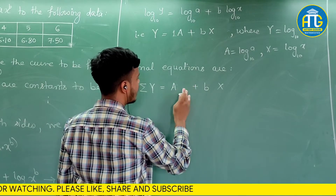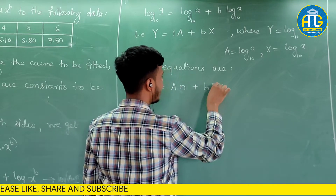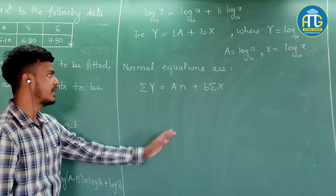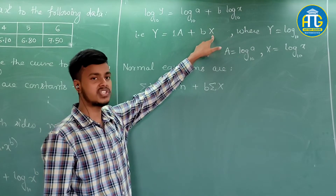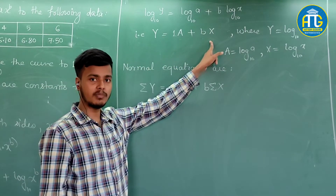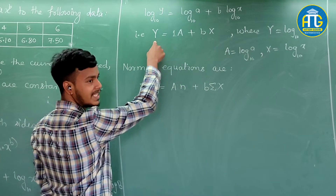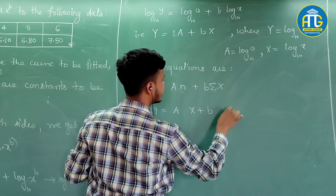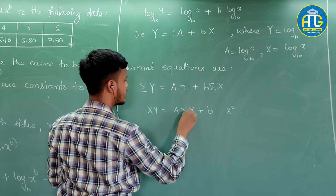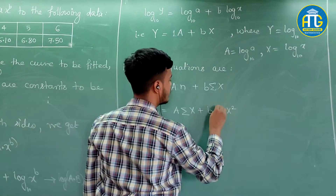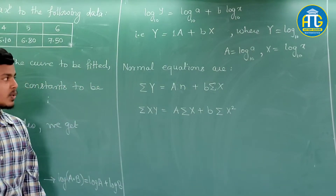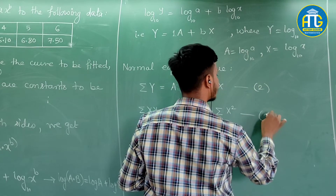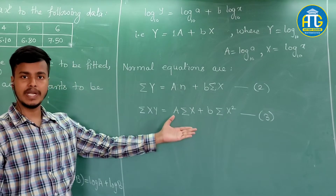So the first normal equation gives: summation Y = nA + b·summation X, where A·summation(1) = nA. The second constant is b with coefficient X, so multiply the equation by X and take summation: summation Y = A·summation X + b·summation X². Call these equation 2 and equation 3.